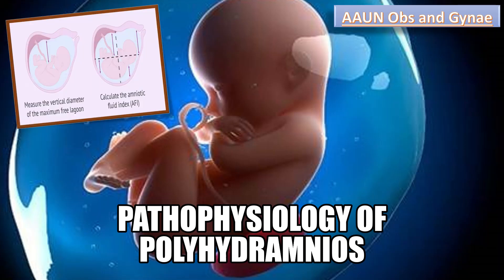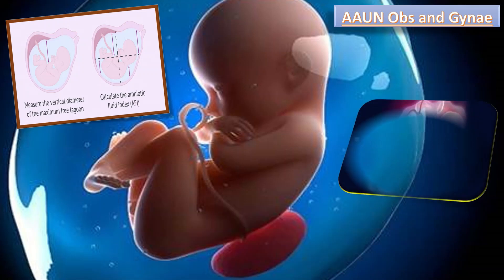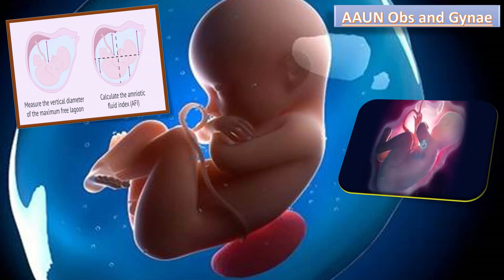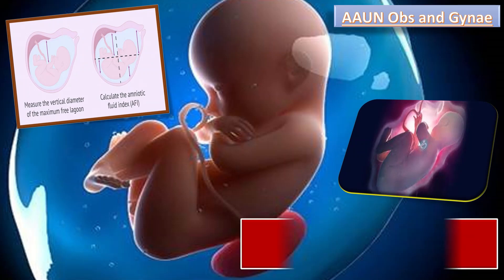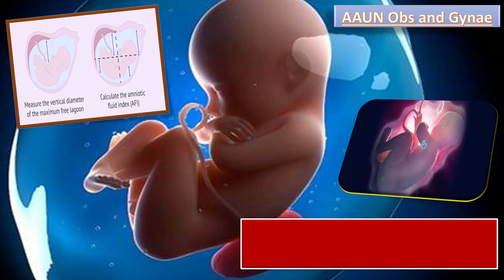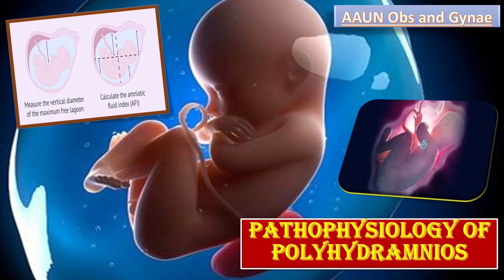Amniotic fluid is formed by a specific mechanism in pregnancy. In this video, first I will explain how amniotic fluid is formed normally, and then one by one, I will clarify how the different causes of polyhydramnios which we discussed before increase the amount of amniotic fluid around the baby. The topic of our discussion today is pathophysiology of polyhydramnios.